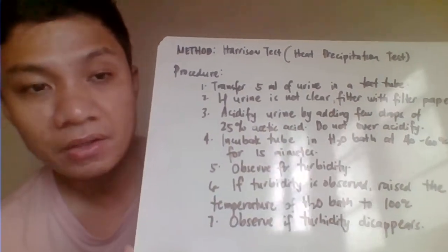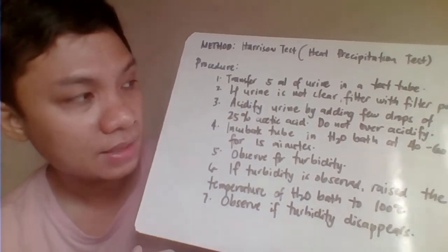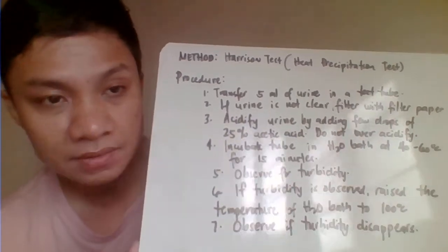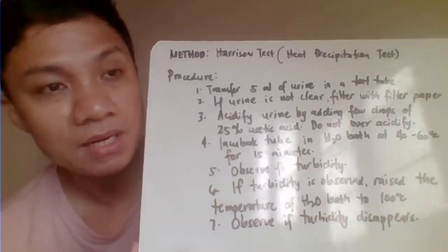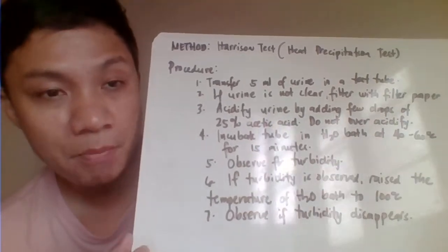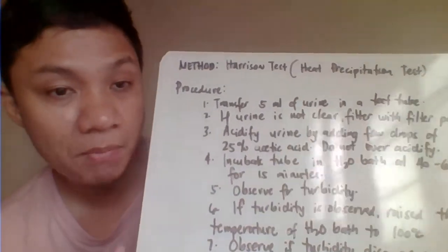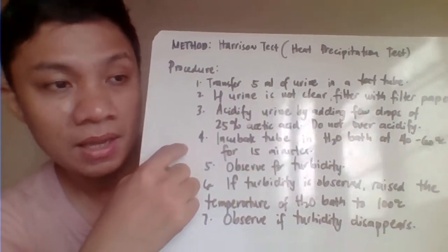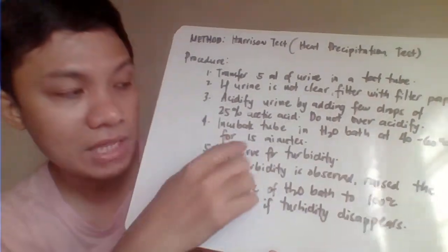You also need to acidify the urine sample by adding drop by drop of 20% acetic acid. Do not over-acidify. Check if the sample is acidic using litmus paper — once it is acidic, you can proceed with testing. Then incubate at 40 to 60 degrees Celsius in the water bath for 15 minutes.